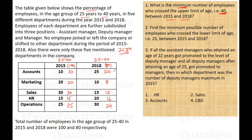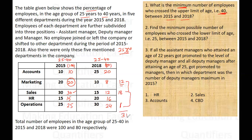We simply check those departments where the number of employees in this age group decreased. In Accounts, the number actually increased. In Marketing, it decreased by 12, so 12 people may have crossed age 40. In Sales, 30 people were in this age group and only 12 remain, so 18 people may have attained age 40. In HR the number increased, but in Operations one person decreased. So the minimum is 12 plus 18 plus 1, giving an answer of 31.